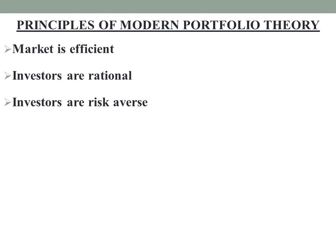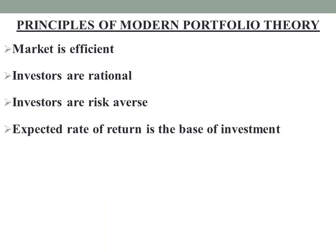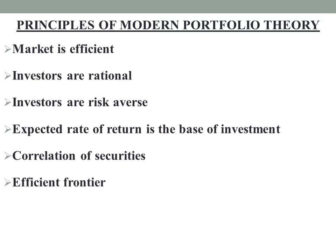Investors are diversifying risk — this is the third principle. The fourth principle is that the expected rate of return is the base of investment, along with standard deviation and correlation as the portfolio selection factors. The fifth principle is the correlation of securities. Negatively correlated securities combined together result in lower risk and a better return. Positive and negative correlation are key factors. The last principle is the efficient frontier — it is possible to construct an efficient frontier of optimal portfolios offering the maximum possible expected return for a given level of risk.